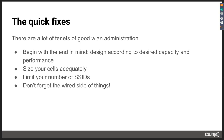There are important tenets of good wireless LAN administration. As Stephen Covey said: 'Begin with the end in mind.' Design according to desired capacity and performance. Size your cells adequately. Limit your number of SSIDs — Andrew Von Nagy has a great tool showing the overhead generated by multiple SSIDs. We like to see three or fewer SSIDs to avoid too many beacons, which are always sent at the lowest rate possible. If you have slow beacons every 102 milliseconds and too many of them, you can't move your clients on and off the network as fast as you need to.